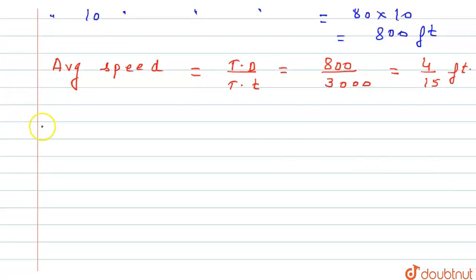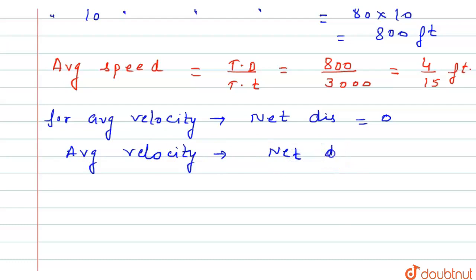Now for average velocity, net displacement of teacher is equals to zero. So average velocity is equals to net displacement divided by time which is equals to zero.